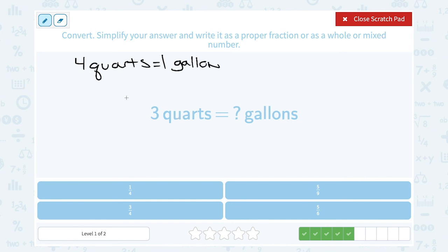That means if I want to go from quarts to gallons, I need to divide by 4, or multiply by one-fourth. So I had 3 quarts. I'm going to take my 3 and divide it by 4, or put it over 4. So there's three-fourths of a gallon in 3 quarts.